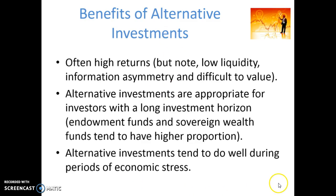Here we talk about endowment funds and sovereign wealth funds as being key beneficiaries of this asset class. Traditionally, it's these sorts of investors who have had high proportional investment in alternative investments. The endowment funds of some very large universities around the world tend to have high amounts of alternatives as part of their asset allocation decision, and similarly sovereign wealth funds operated by various governments also have a high proportion.